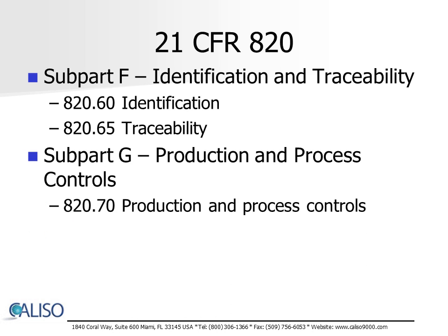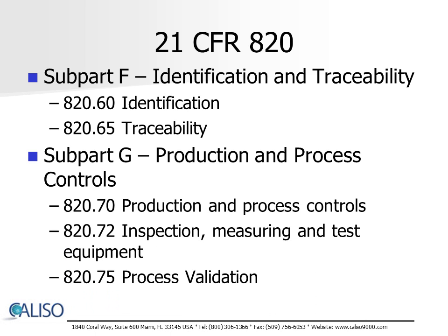Subpart G, Production and Process Controls. This is also a quite detailed section, and includes requirements for control of production and process changes, environmental control if the environment can adversely affect the product, personnel hygiene requirements, building suitability, and maintenance of machinery. Subpart G also contains requirements for inspection, measuring, and test equipment, also known as calibration, and process validation.